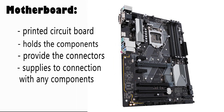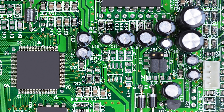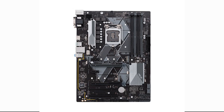The motherboard supplies communication between many crucial electronic components of a system, such as the CPU and RAM, and provides connectors for other peripherals. On the motherboard, you can see standard components like capacitors, resistors, and VRMs which manage the electrical current. In brief, the motherboard connects all parts of a computer together.